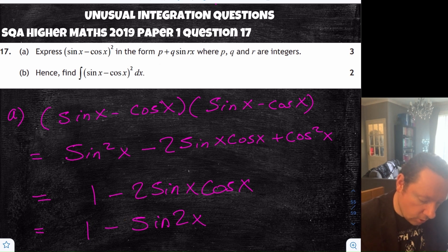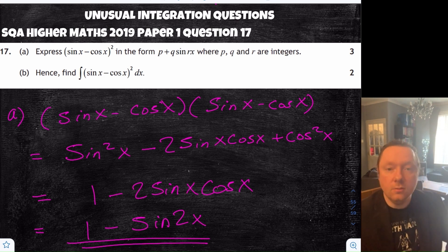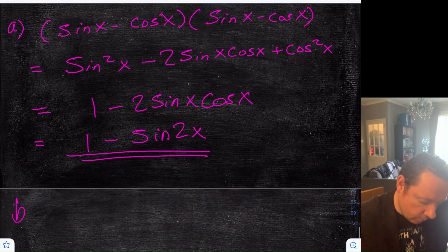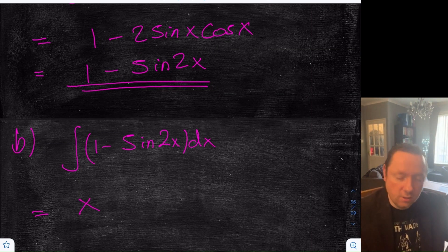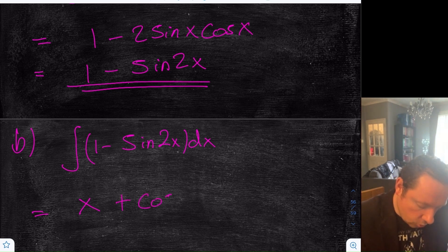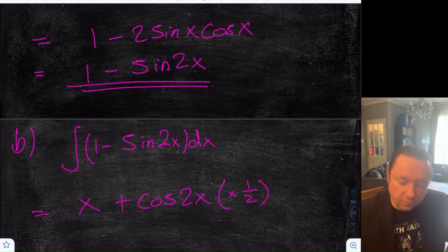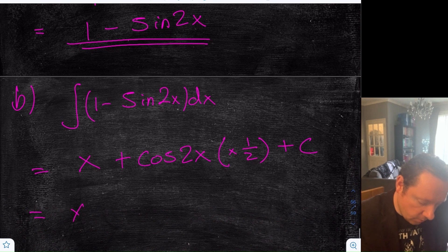Higher Maths 2019 Paper 1 Question 17: express (sinx − cosx)² in the form p + q·sin(rx), then integrate. Expanding: sin²x − 2sinx·cosx + cos²x = 1 − 2sinx·cosx. Using sin2x = 2sinx·cosx, this equals 1 − sin2x. So p = 1, q = −1, r = 2. For the integral: ∫(1 − sin2x)dx = x + (1/2)cos2x + c.